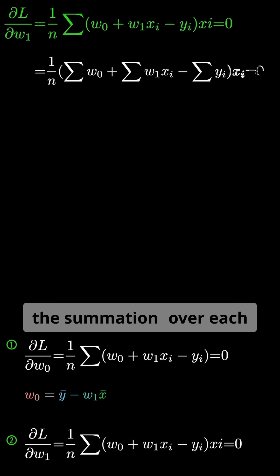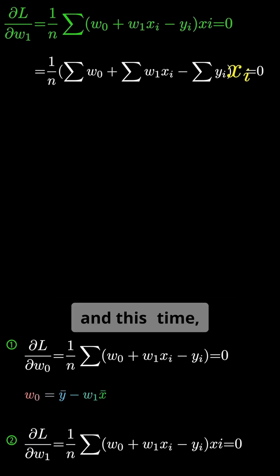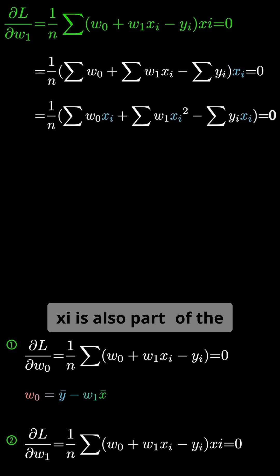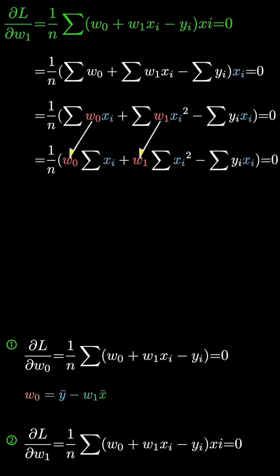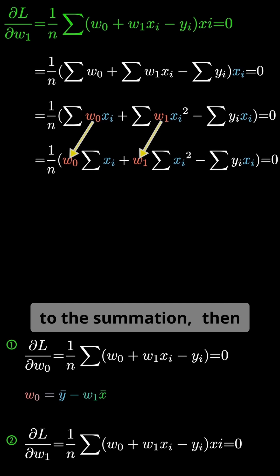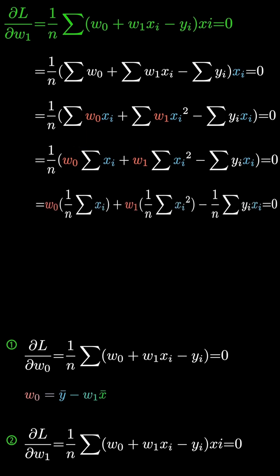We distribute the summation over each term again, and this time, xi is also part of the term, so we distribute it as well. We can factor out anything not related to the summation, then multiply each term by 1 over n, as before.